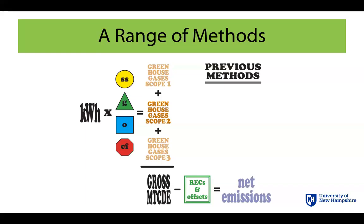That's how we have always done it, but it had some issues. One issue was it treated RECs as offsets — as though they were identical from an accounting perspective — and they're not. They're pretty different vehicles. The other big issue is that these emissions factors had any number of sources that people could use, and depending on what source you used, you'd have a different number which would give you different results.